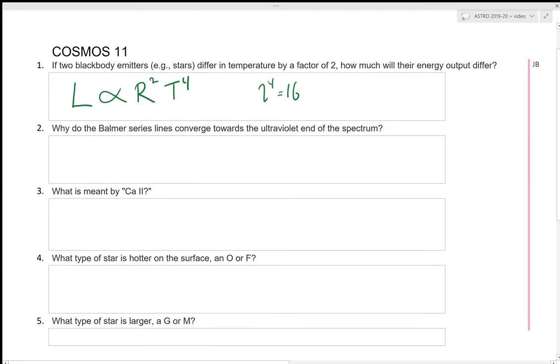So again, this is the Stefan-Boltzmann law. And again, it relates the luminosity of a black body emitter, the radius or the surface temperature. 4πr² is the surface area and the temperature. So again, this relationship, luminosity is proportional to the radius squared and temperature to the fourth.